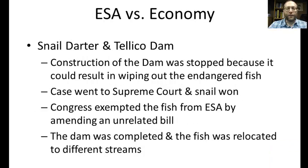Here's one of the first case studies. A fish called the snail darter was listed as endangered, and the Teleco Dam would dam up a river in Tennessee, turning part of it into a lake and potentially wiping out this endangered fish. The Tennessee Valley Authority was sued, the case went all the way to the Supreme Court, and the snail darter won — dam construction had to be stopped. The TVA tried to get an exemption on economic grounds, but it was denied. Congress then exempted the snail darter from the ESA through an amendment to an unrelated bill, the dam was completed, but the fish was saved by moving remnant populations to different streams.